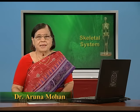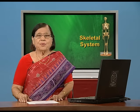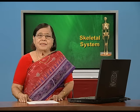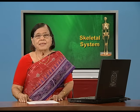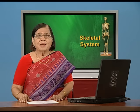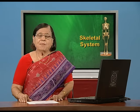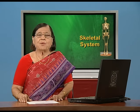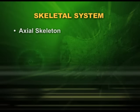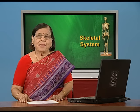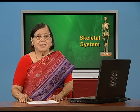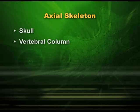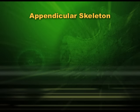Dear students, in previous sessions we discussed about skeleton in relation to movement and locomotion. We did understand that along with bones, the muscles and the nervous system are also important. We discussed in detail about 206 bones which we have in our body — axial skeleton and also the appendicular skeleton. Axial skeleton, which makes the axis of our body, includes skull, vertebral column, and the ribcage. Appendicular skeleton includes the girdles and the limb bones.